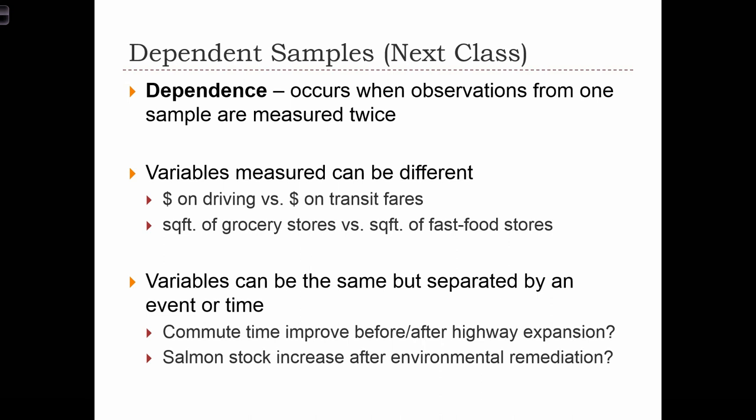We can also measure the same variable twice at different times. For example, we can look at commuting times before and after a highway expansion, where observations are individuals measured before and again after the expansion. Or for salmon stock, we can measure rivers before and after environmental remediation.